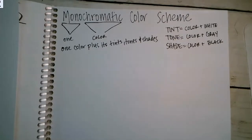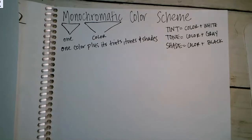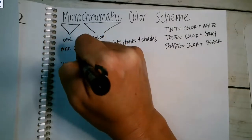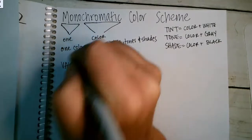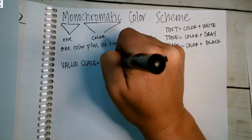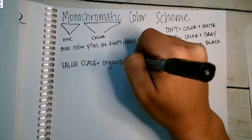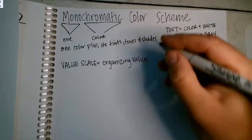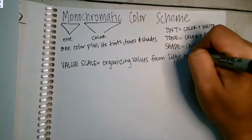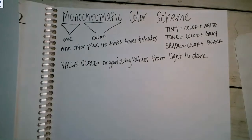And we are going to make a value scale. We've talked about value before, but a value scale is organizing values from light to dark. And so we're going to do that today. You can pause the video if you need to get these notes, but I am going to move on.